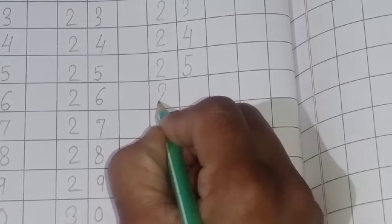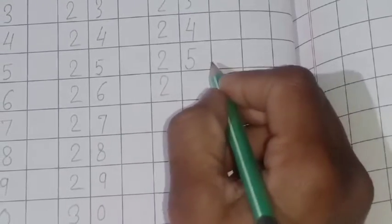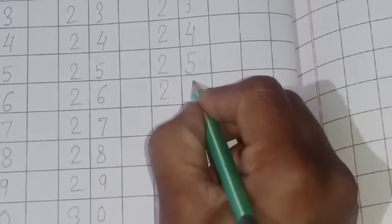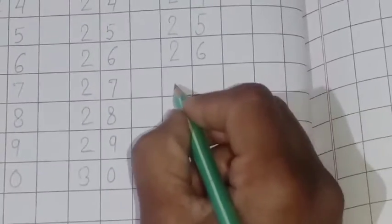Next spelling 26. T-W-E-N-T-Y, twenty. S-I-X, six.